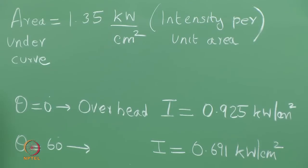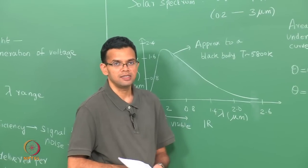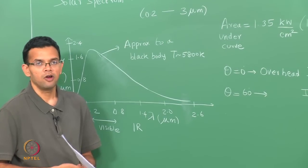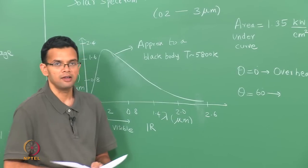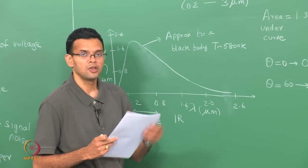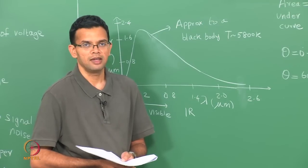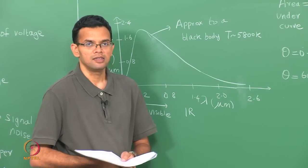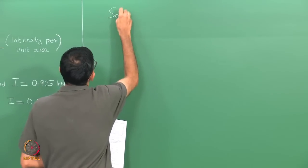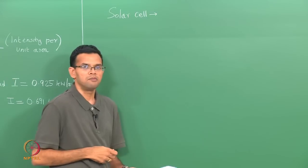There is an energy spread to the spectrum. The actual intensity arriving at the Earth depends upon scattering from the atmosphere and also the incident angle of the radiation. This radiation needs to be absorbed by your device in order to produce an electrical signal. Let us consider a simple design of a solar cell based on a simple p-n junction.